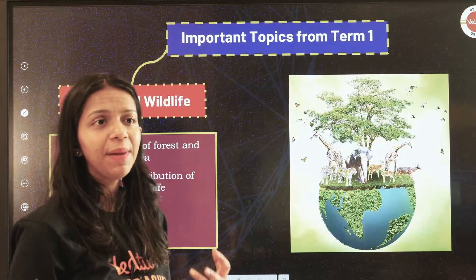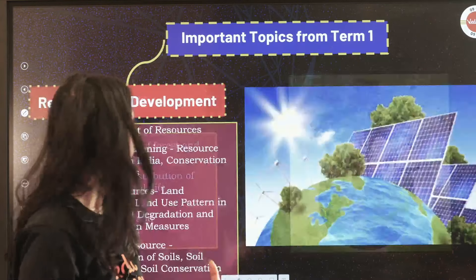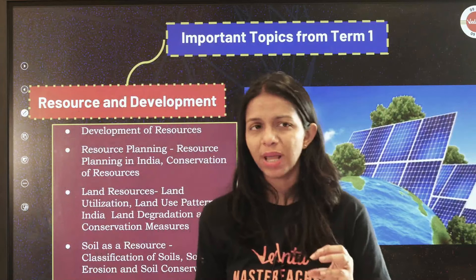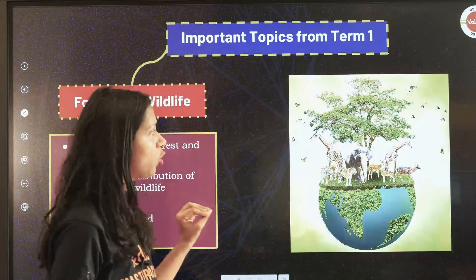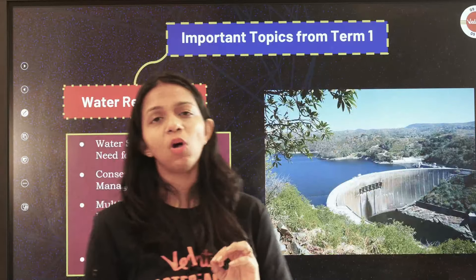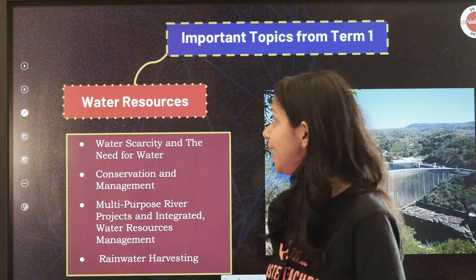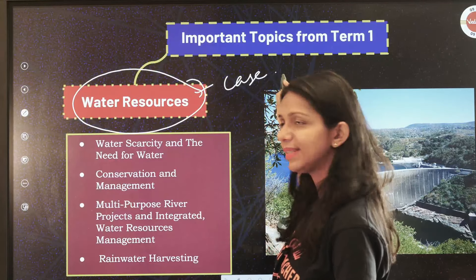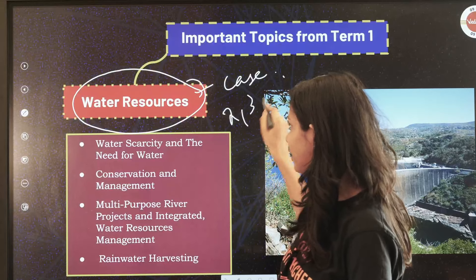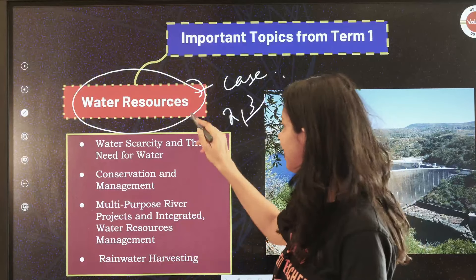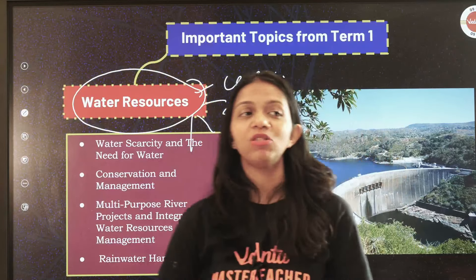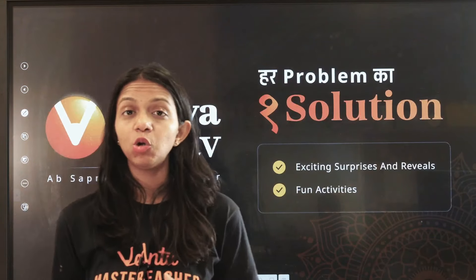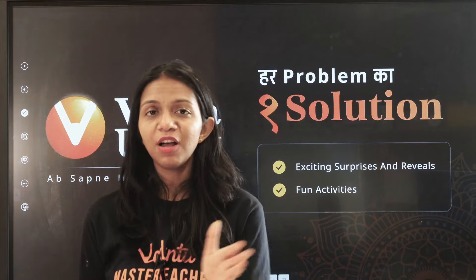I will tell you the important topics of Economics chapters as we go ahead. For Geography in Term One, Resources and Development and Forest and Wildlife Resources are both very short chapters that you need to do properly. The Water Resources chapter mostly gives case-based questions or 2 to 3 mark questions — it is also divided into parts which I'll explain when we cover that chapter. These are easy chapters you need to complete properly by the time July comes.